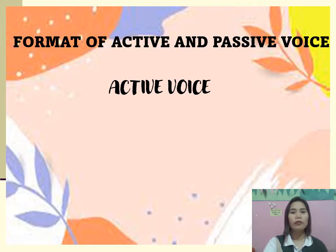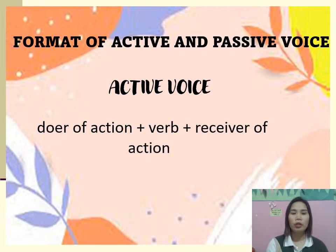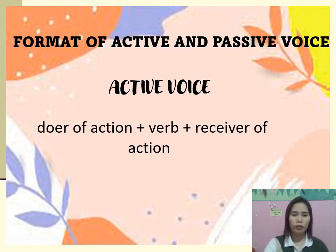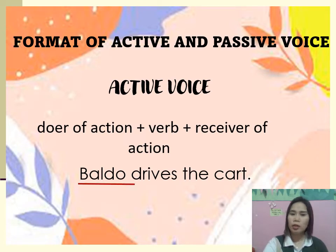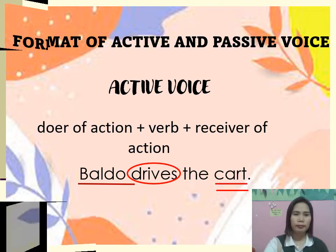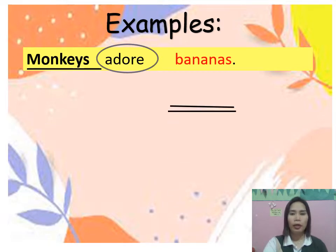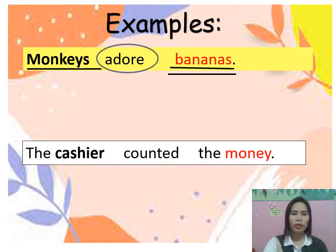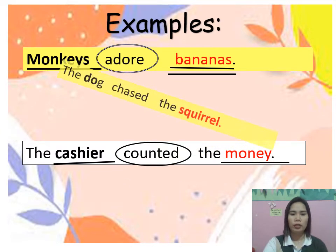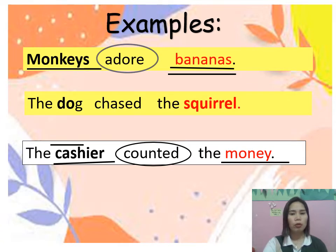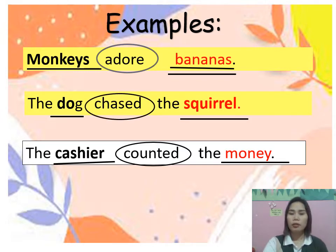The format of active voice is: doer of action (subject) + verb + receiver of action (object). For example: 'Baldo drives the car' — Baldo is the subject, followed by the verb, followed by the receiver. More examples: 'Monkeys adore bananas' — monkeys is the subject, adore is the verb, bananas is the object. 'The cashier counted the money.' 'The dog chased the squirrel' — dog is subject, chased is verb, squirrel is the object.